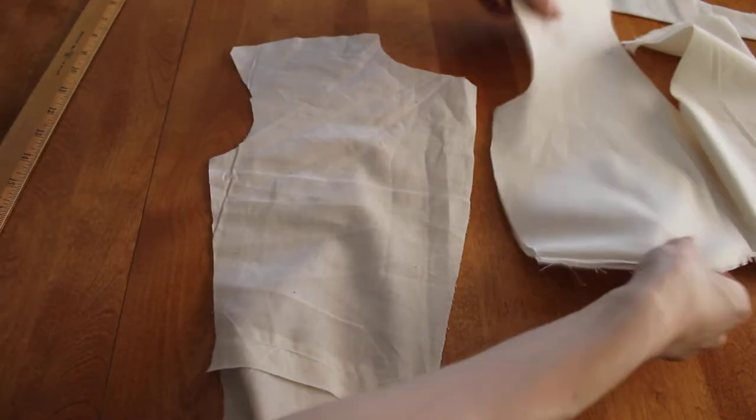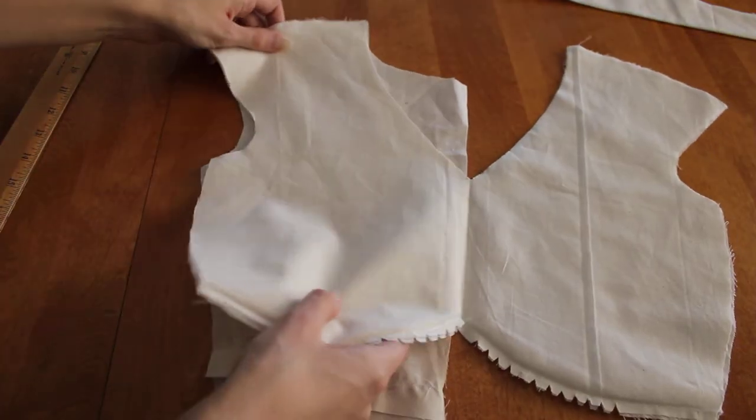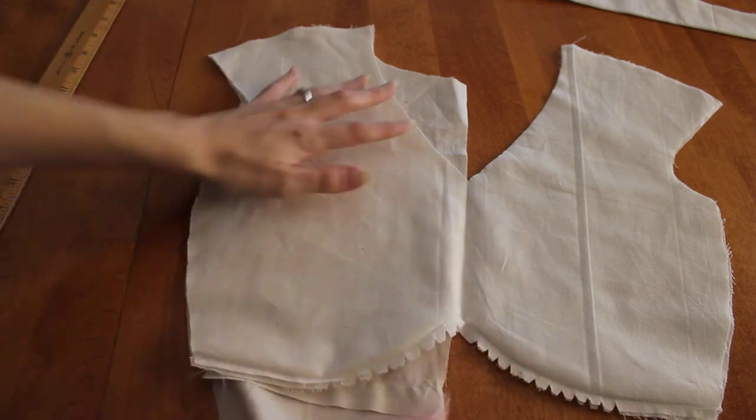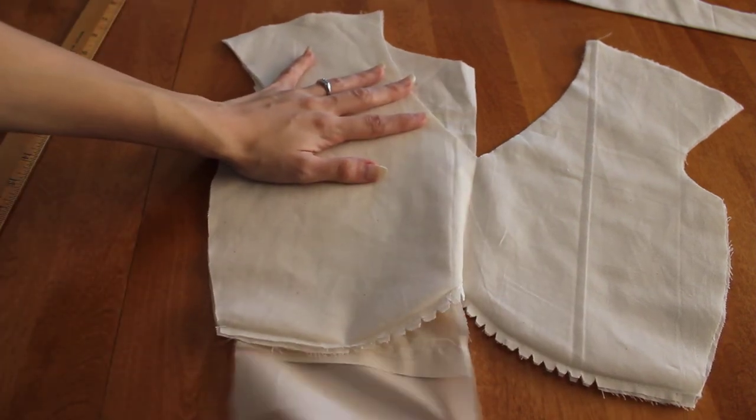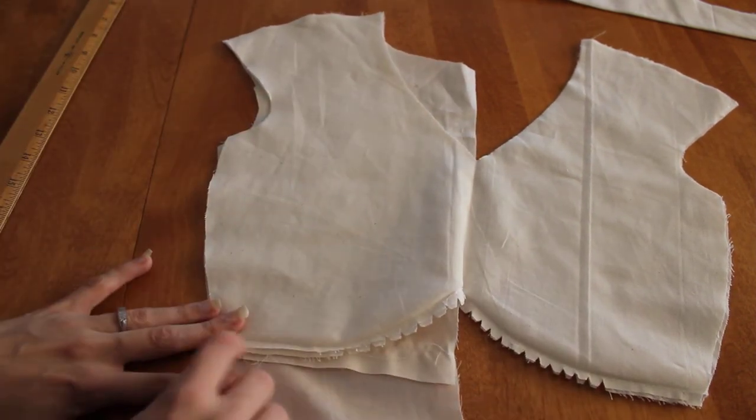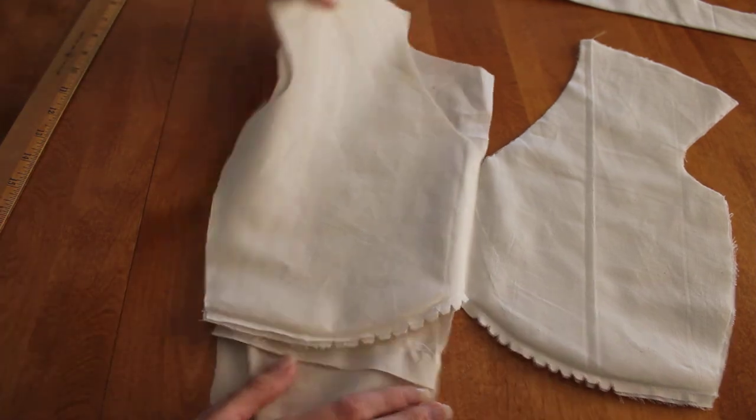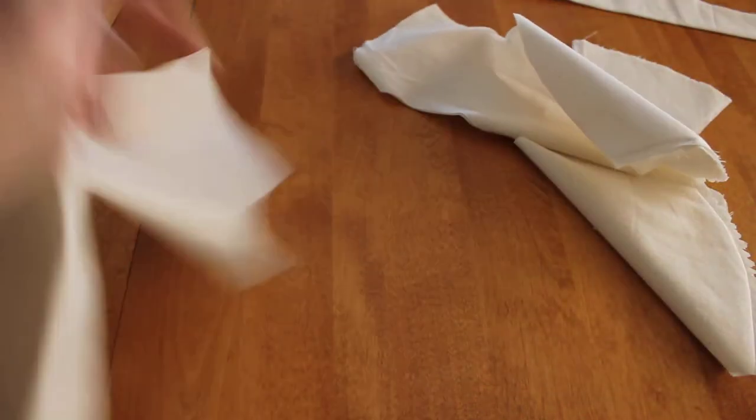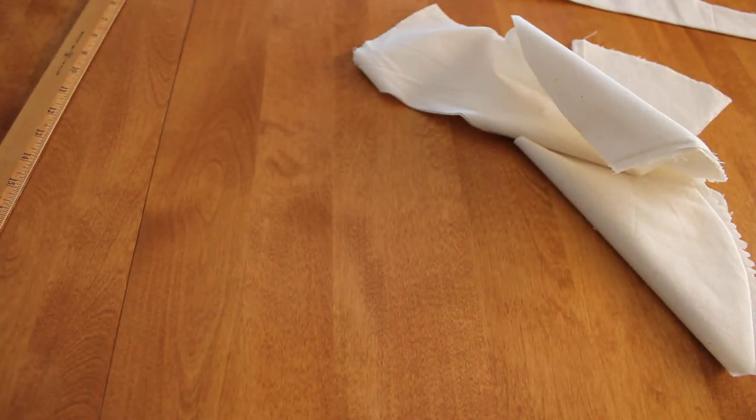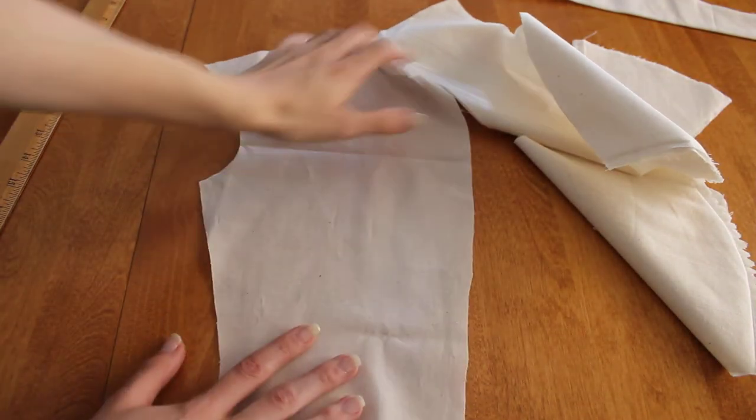So you have your back, kind of match up the fabric pattern as best as you can. And then you're going to end up cutting at the longest point straight across. And then that will give you the back piece of your breastplate.